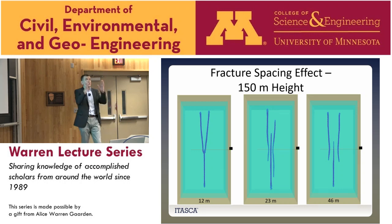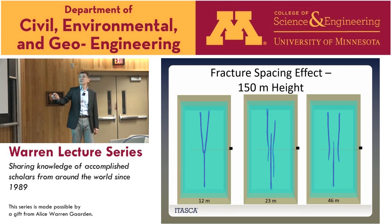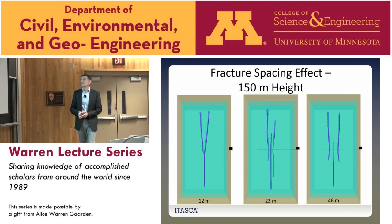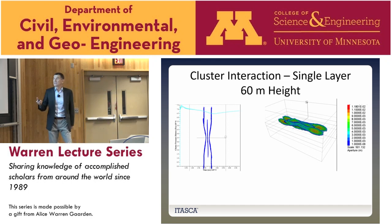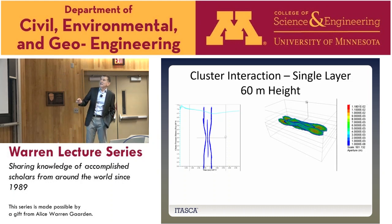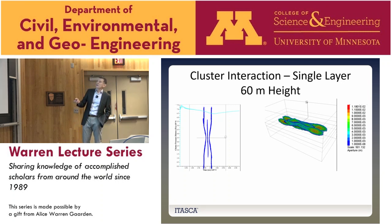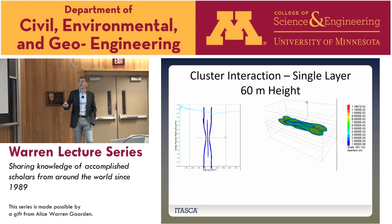The isometric view with aperture contours shows interesting 3D interactions — where fractures appear to overlap in plan view, one propagates downward and the other propagates upward. This is a model where the reservoir height outlined by stress barriers is 150 meters; containment is provided by higher horizontal stresses in the layers above and below. In a sensitivity analysis looking at the effect of injection point spacing on fracture geometry, halving the spacing shows only one fracture going one way; increasing the spacing shows somewhat less fracture interaction.